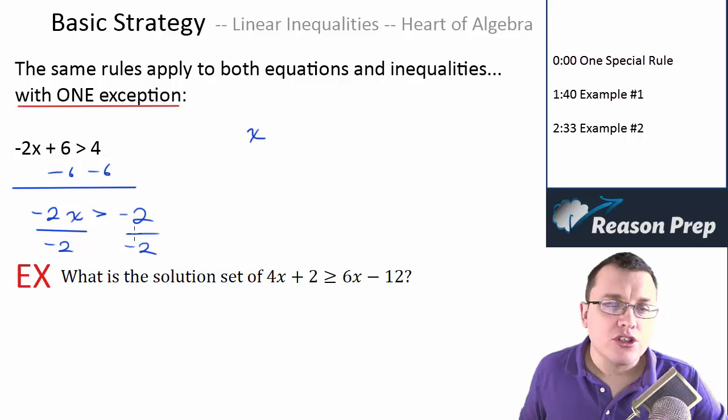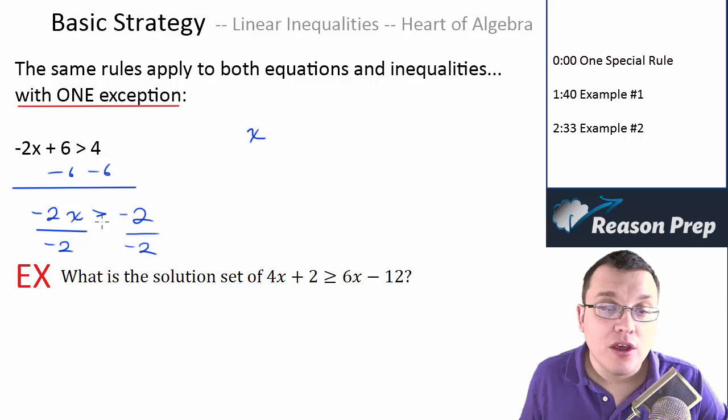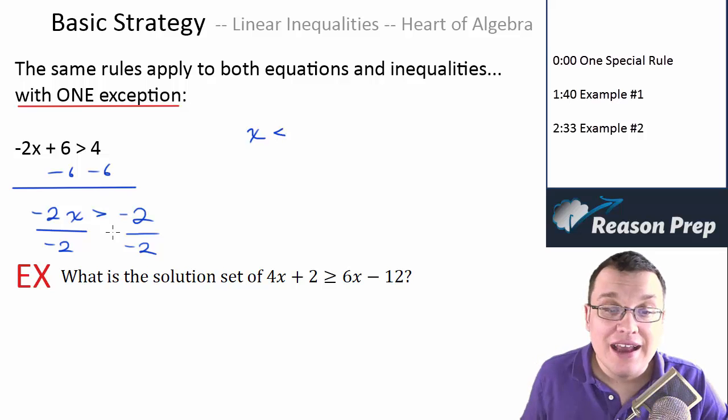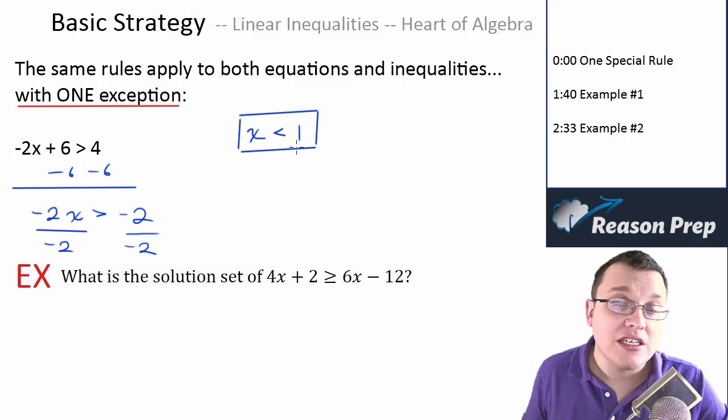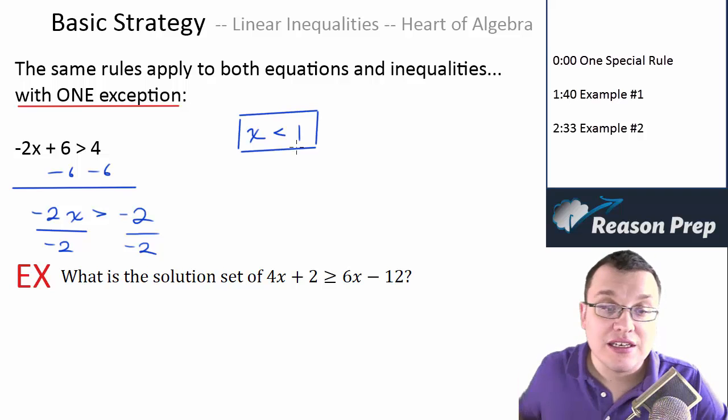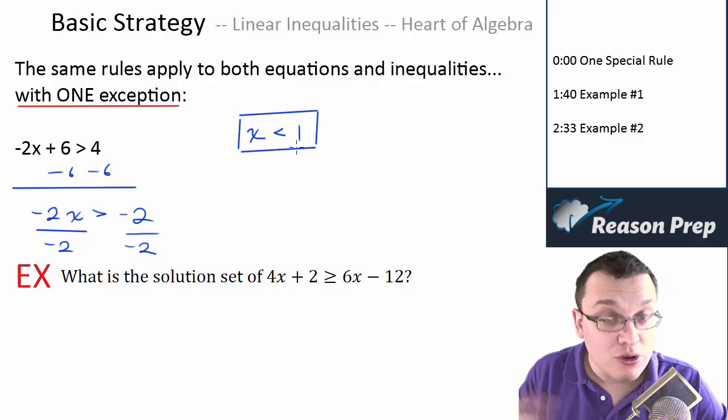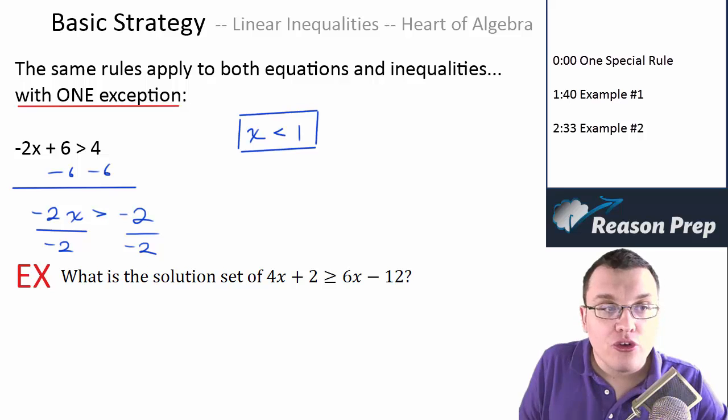We do that, and here's the trick. When you divide or multiply by a negative number, you have to flip your inequality sign. So it used to be greater than, now it's less than. So our answer is going to be x is less than 1, and I can guarantee one of the trap choices you're going to see is x is greater than 1 if you had forgotten to flip the sign.